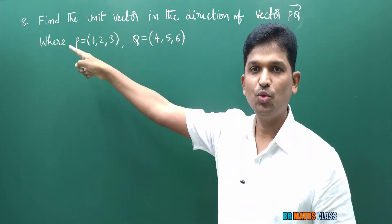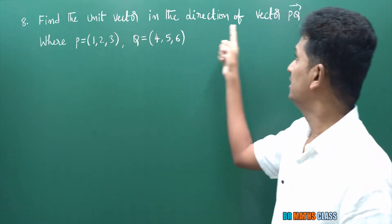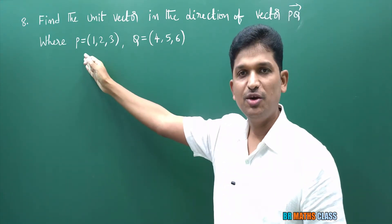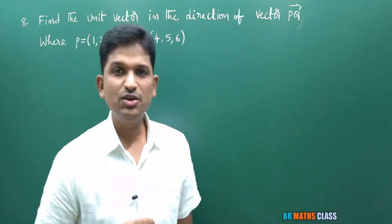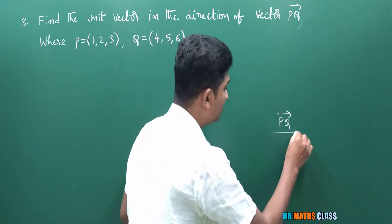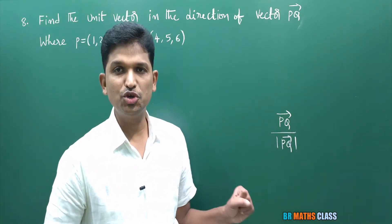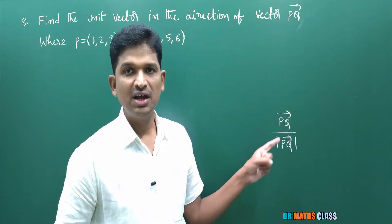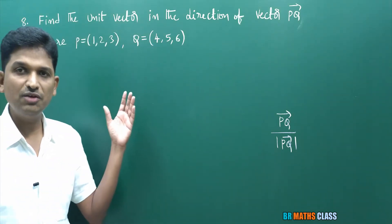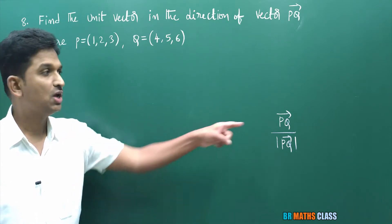In question number 8, they ask: find the unit vector in the direction of PQ⃗. They given point P and point Q. The unit vector in the direction of PQ⃗ is PQ⃗ divided by magnitude of PQ⃗. To calculate this I need PQ⃗ and its magnitude. But in the question, they only given the points P and Q, not PQ⃗ or its modulus. So first I will calculate PQ⃗ and its magnitude.